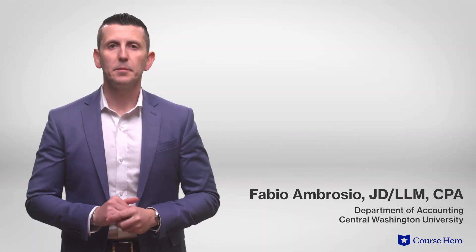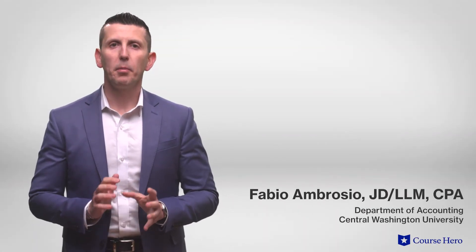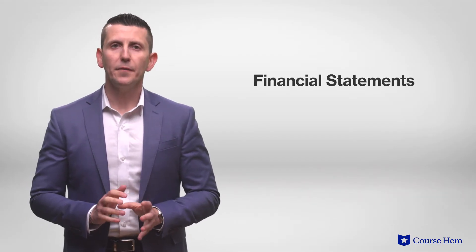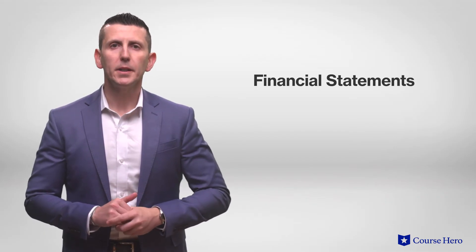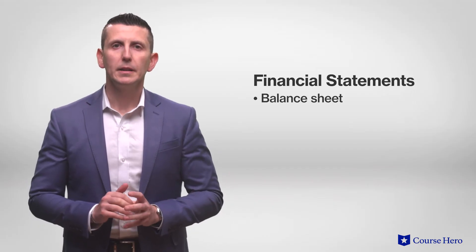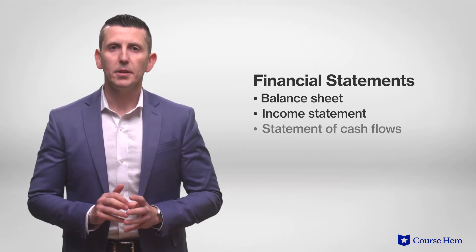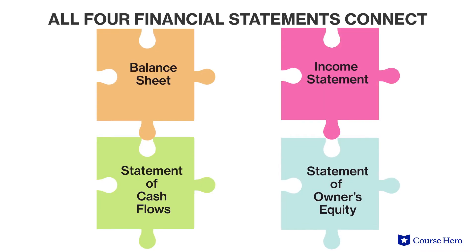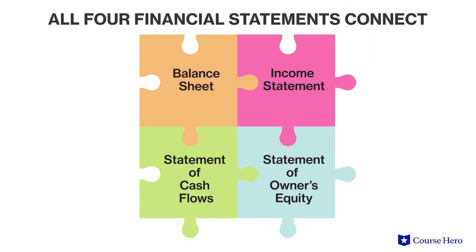Financial statements are the end product and one of the most important products of the accounting cycle. When we say financial statements, we typically refer to the balance sheet, the income statement, the statement of cash flows, and the statement of owner's equity. The adjusted trial balance forms the basis for the financial statements. All four financial statements connect with each other to form a complete picture of the financial aspects of an organization.